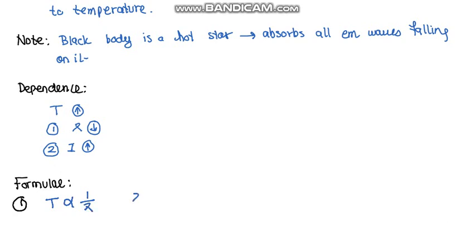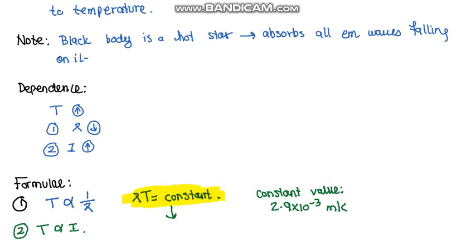Number one is the temperature is inversely proportional to the wavelength. So from this we can see that lambda T would be a constant, and the value of the constant is 2.9 times 10 to the power negative 3 meter Kelvin, and we have developed a formula for this. The other formula or relation we could develop is that temperature is directly proportional to the intensity. This relationship lambda T equals 2.9 times 10 to the power negative 3 is known as Wien's displacement law.